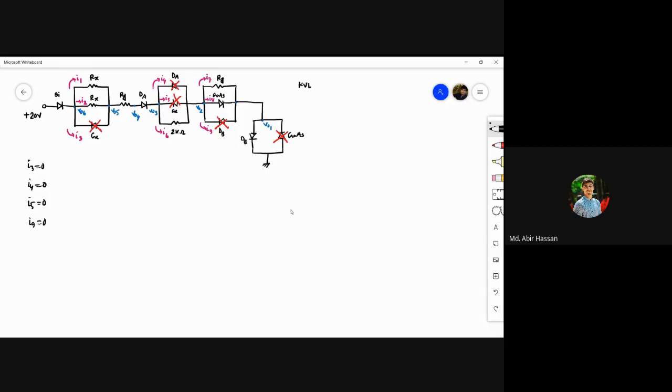Apply KVL to this circuit. The current through Rx - due to two resistors being connected in parallel with the same resistance value, the current values will be the same.